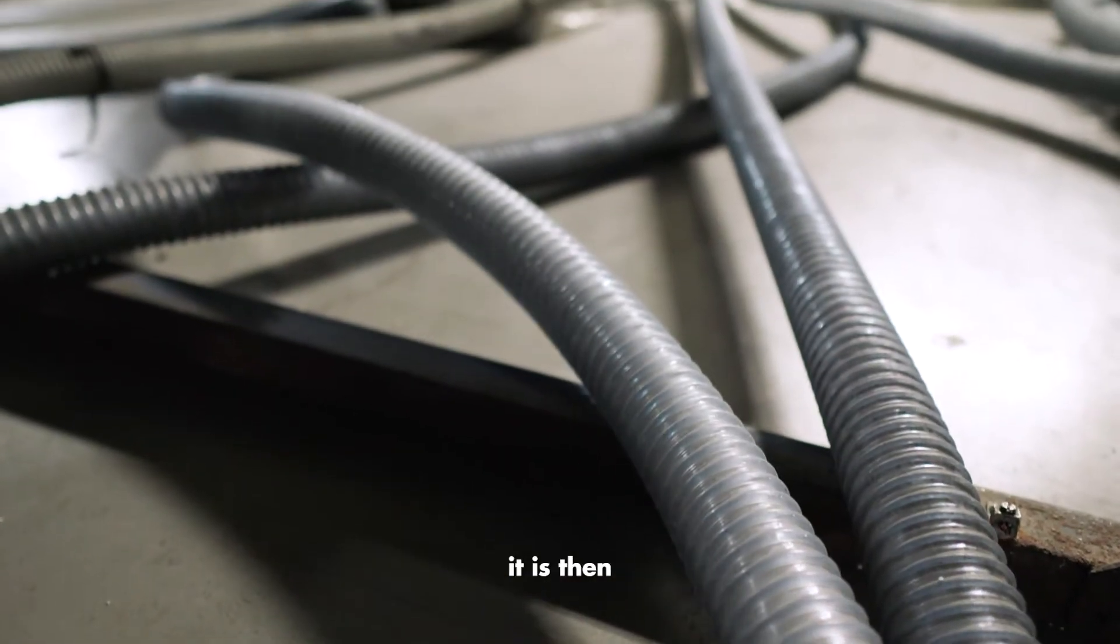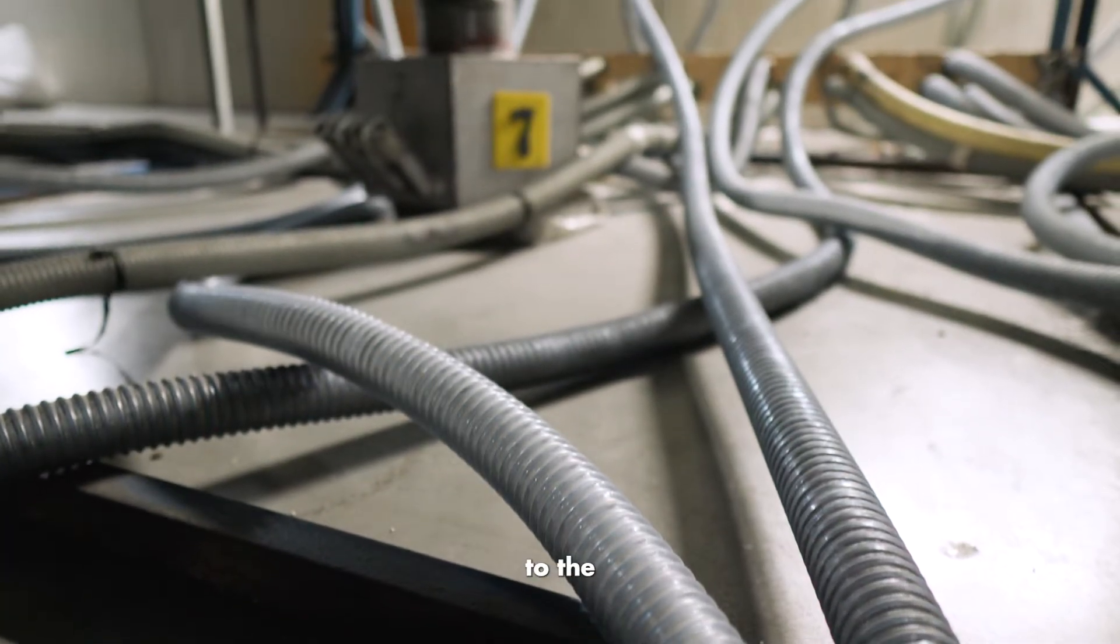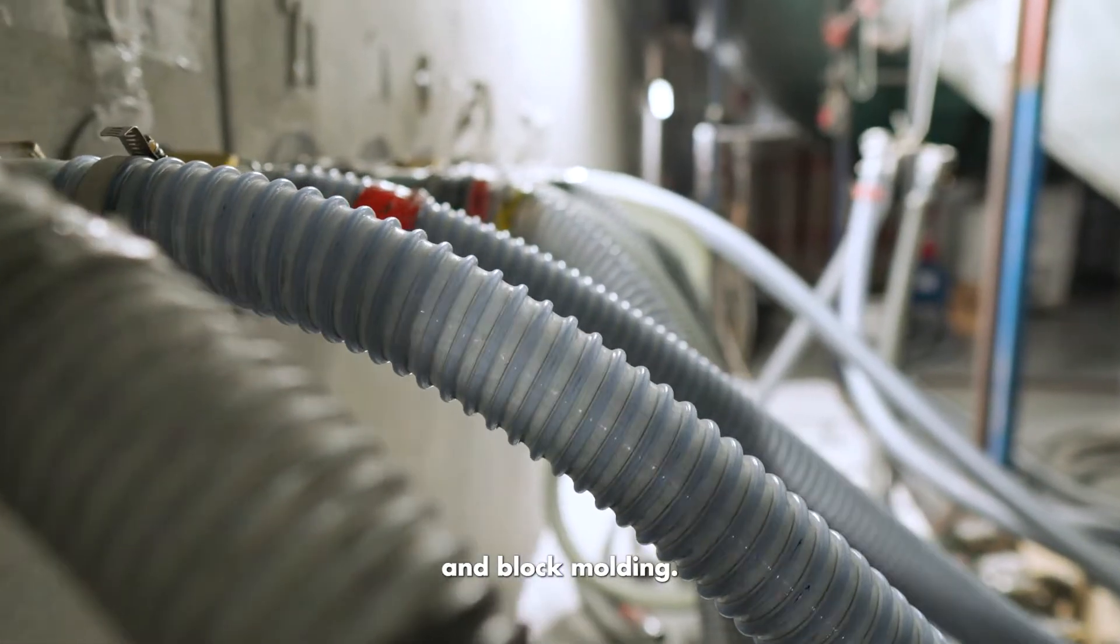When the pre-expanded bead is cured, it is then transferred by air and hoses to the two different sides of manufacturing: shape molding and block molding.